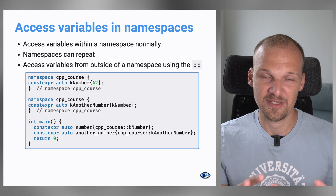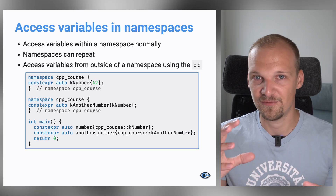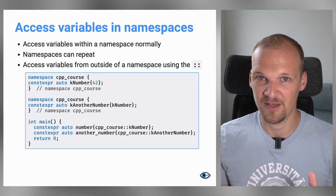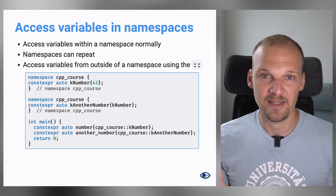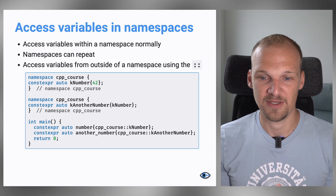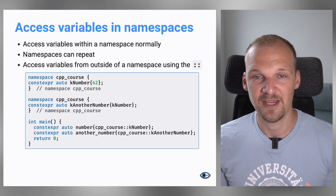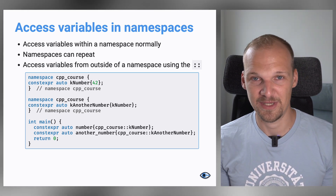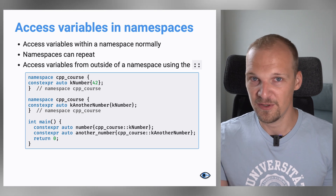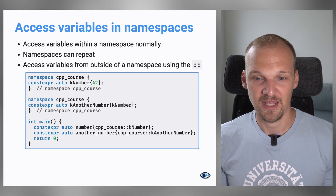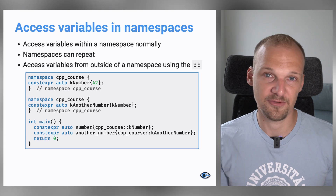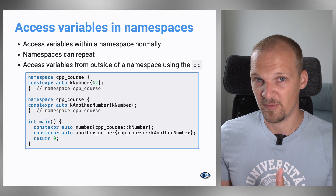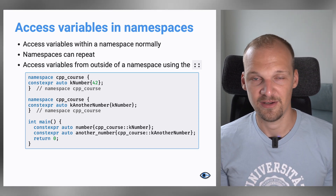You can split the namespace definition across different files and different definitions. If I use the namespace keyword with the name cpp_course twice, they will magically know they live in the same namespace. For example, if I create another_number in the second definition of the namespace, I can use k_number from the first definition, and it will all just work. Then I can reference these in my main function, outside the namespaces, with cpp_course:: followed by the names of my constants.